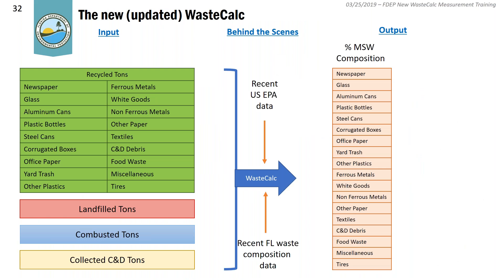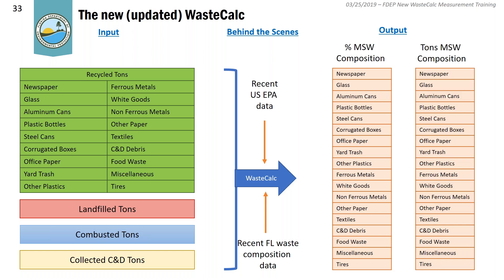The output for the new Waste Calc is similar to the old one, showing percent MSW composition. But the new Waste Calc also provides the tons associated with those percentages. Previously, users had to calculate tons by hand to enter into the retrack workbook. The department wanted to include tonnages to save the user time and reduce confusion. Another change is that the order of material categories has been rearranged to reflect the order listed in retrack and the retrack workbook.